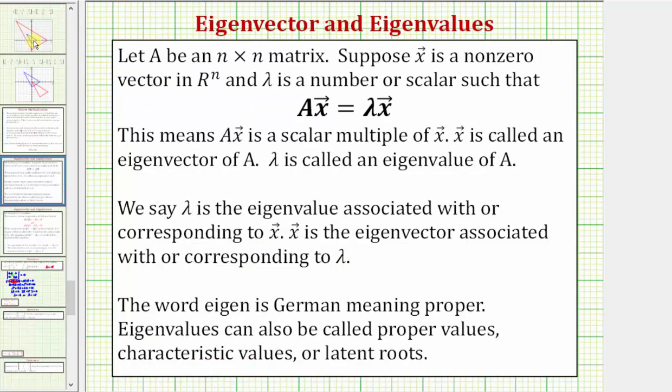So for review, if A is an n by n matrix, suppose that x is a non-zero vector in R^n, and lambda is a number or scalar, such that A times vector x equals lambda times vector x.